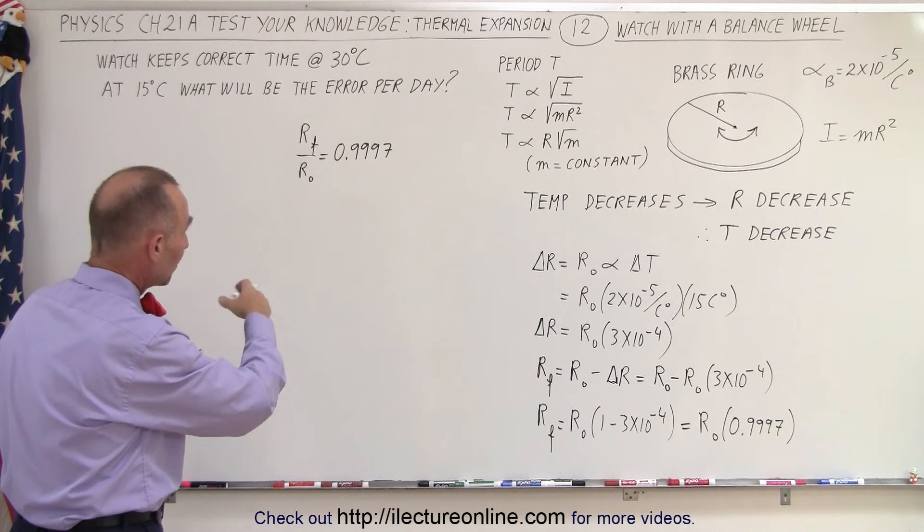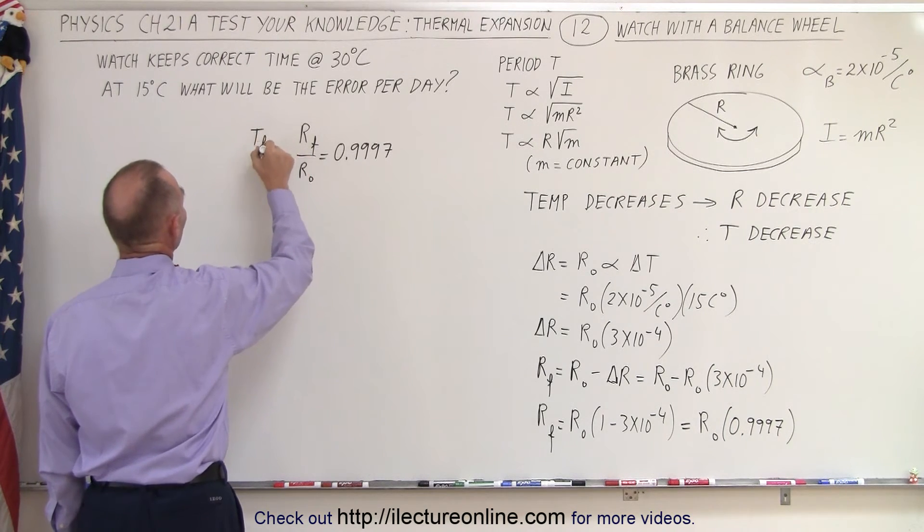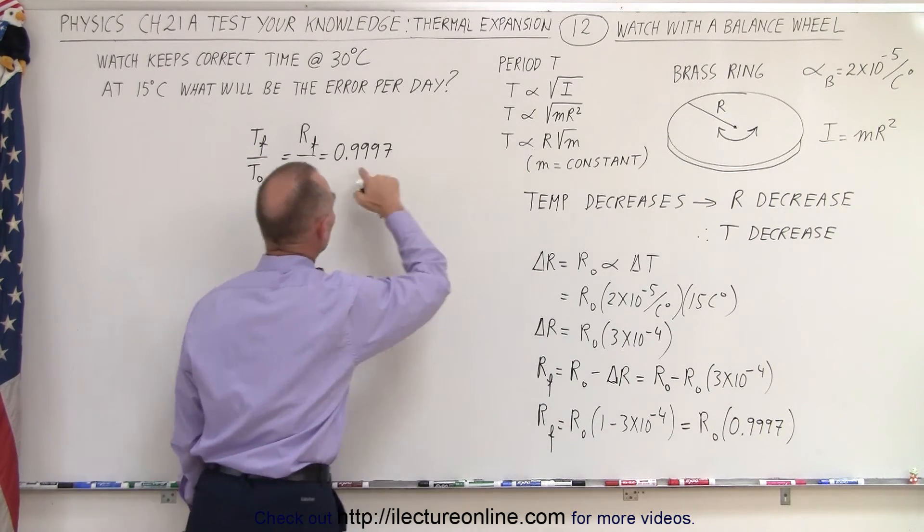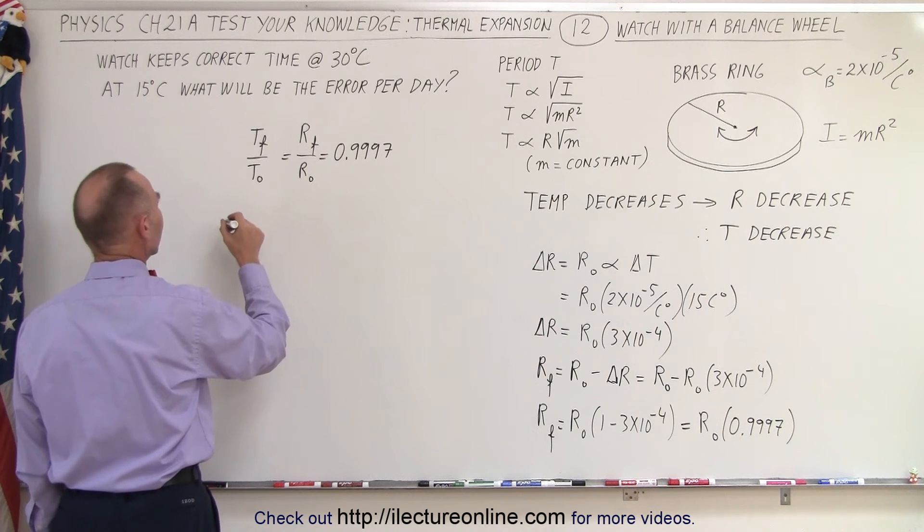That kind of change in the radius, which means that kind of change in the period. So we can say that period final over period initial, because we have the linear relationship, would be equal to that number.